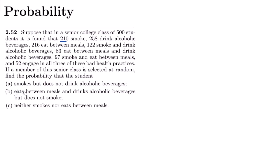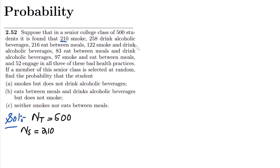Before diving into the details, let me write the given data. The total number of students is n_t = 500. The number of students who smoke is n_s = 210. The number who drink alcoholic beverages is n_d = 258. And the number who eat between meals is n_e = 216. These are the basic data samples given to us.